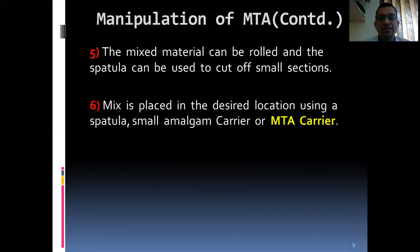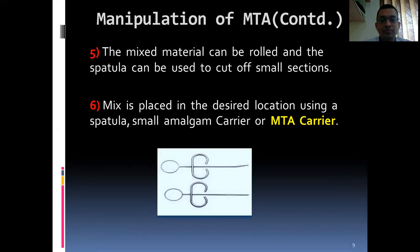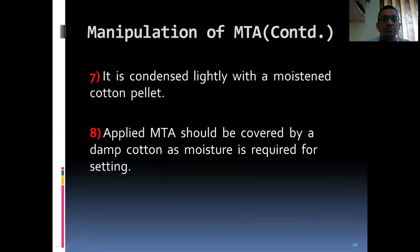The mixed material can be rolled and the spatula can be used to cut off small sections. The mix is placed in the desired location using a spatula or small amalgam carrier — better is the MTA carrier. It is condensed lightly with a moistened cotton pellet. Applied MTA should be covered by damp cotton as moisture is required for setting.